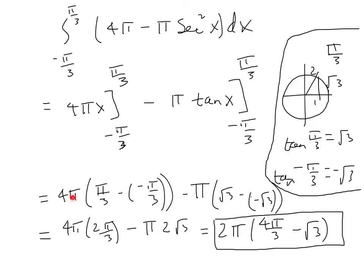So evaluating, we have 4 pi times pi over 3 minus negative pi over 3 minus pi, that's this pi here, times the tangent of x evaluated from minus pi over 3 to pi over 3, and that's this here, square root of 3 minus negative square root of 3. So we have 4 pi times 2 pi over 3 minus 2 root 3 pi. We can factor a 2 pi out of each of those, and we would wind up with 4 pi over 3 minus the square root of 3.